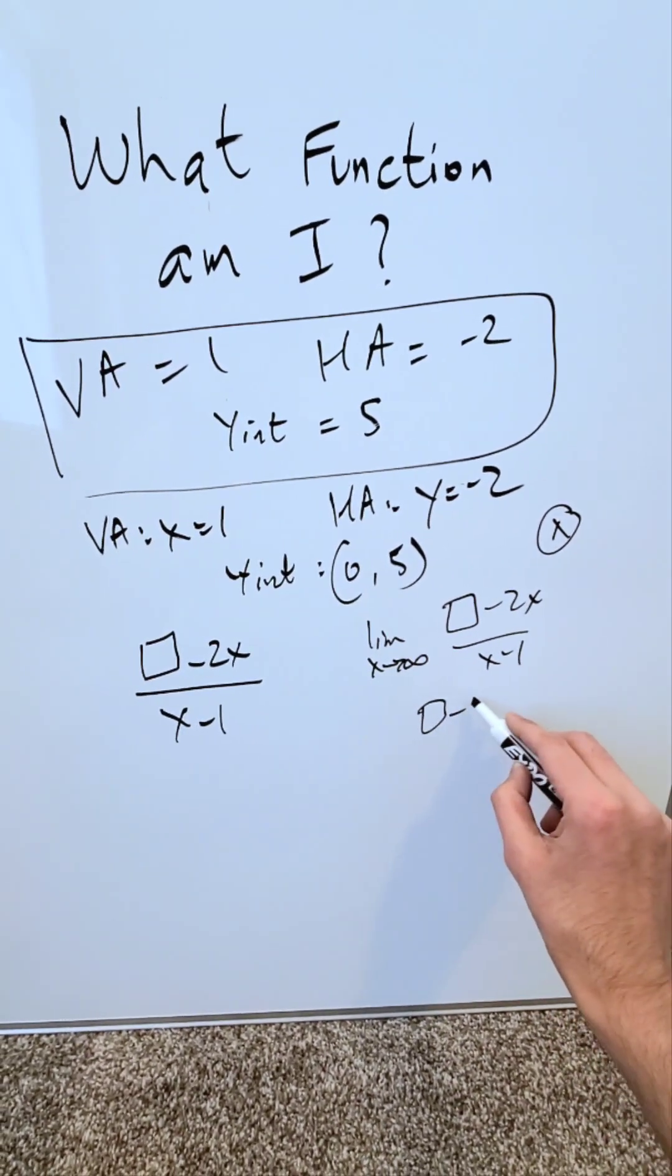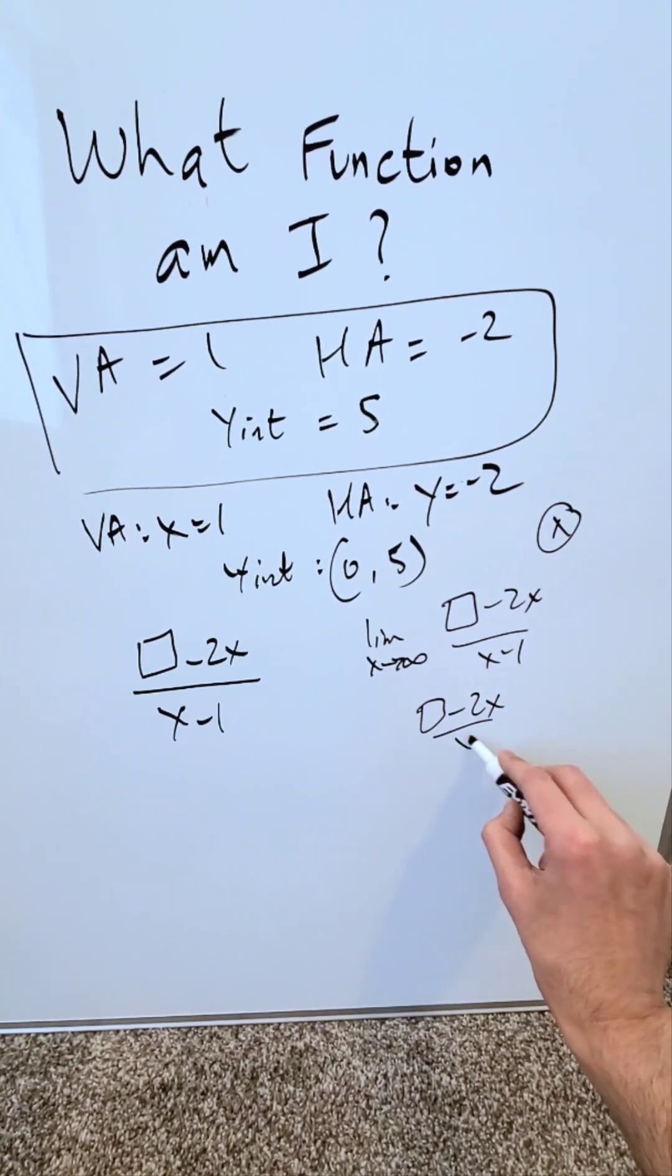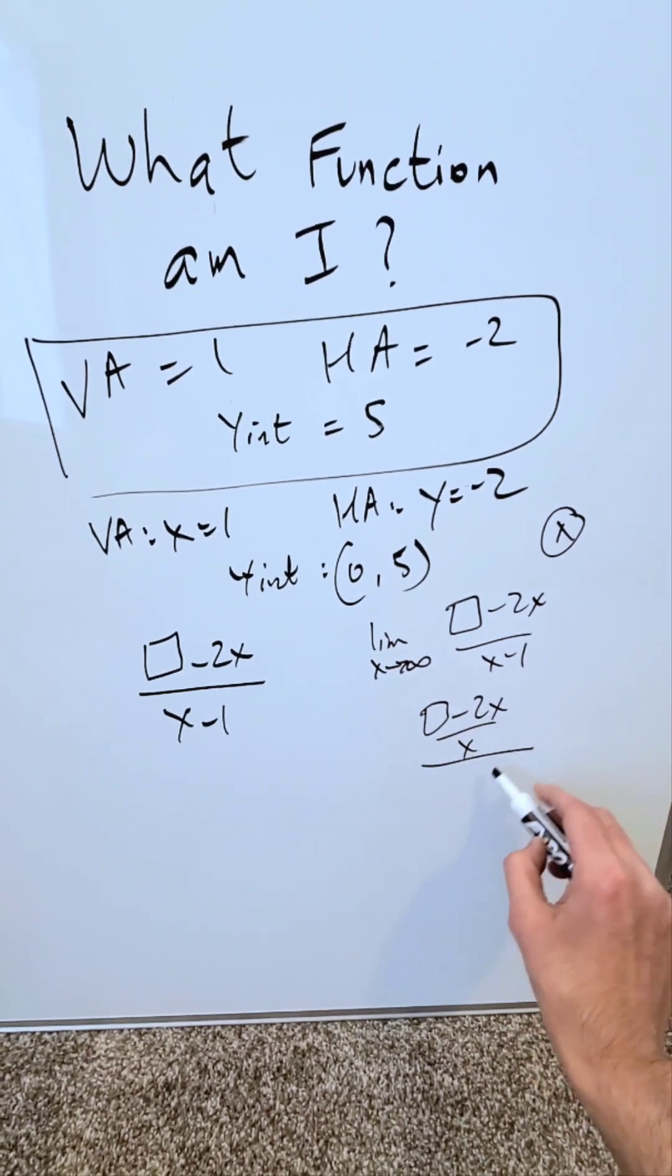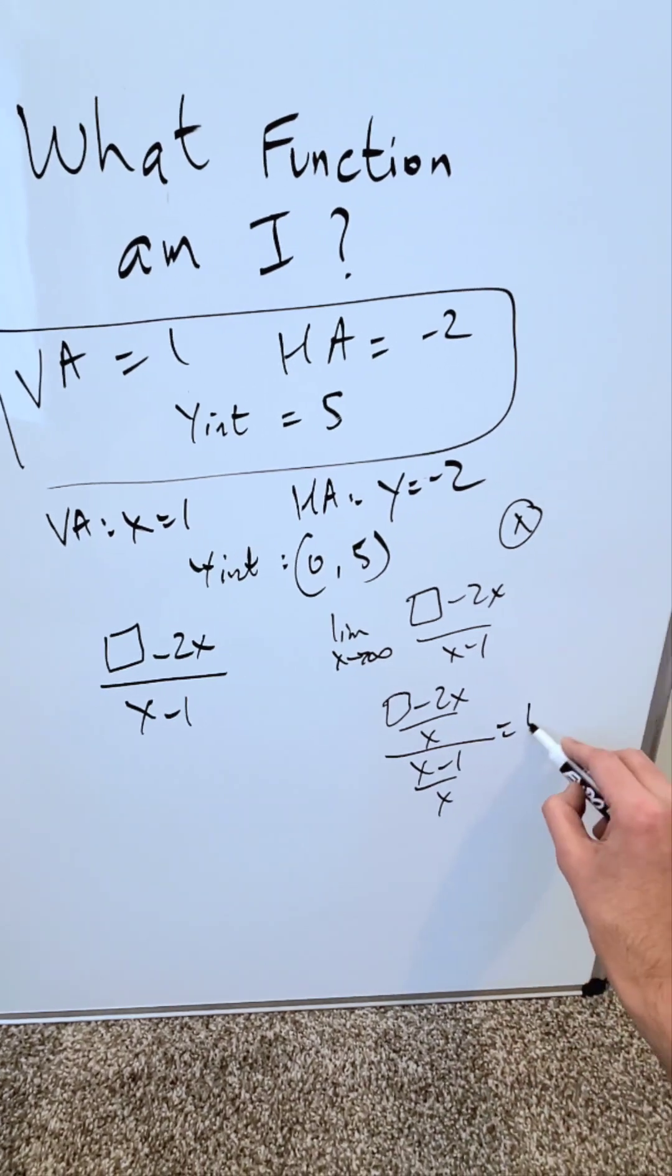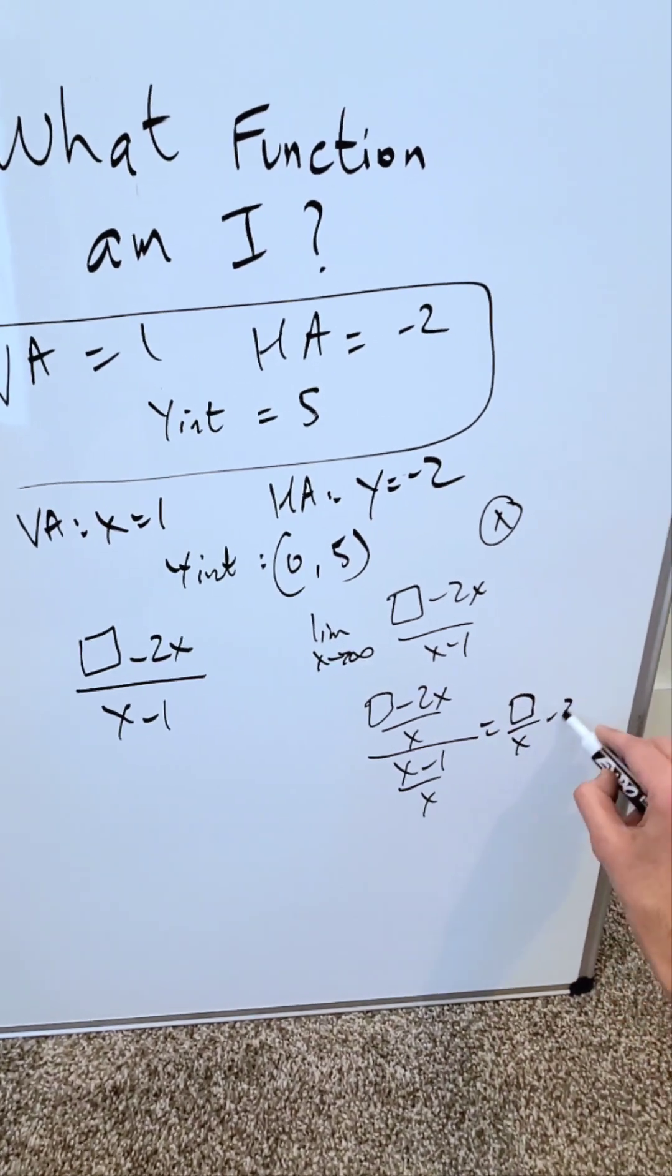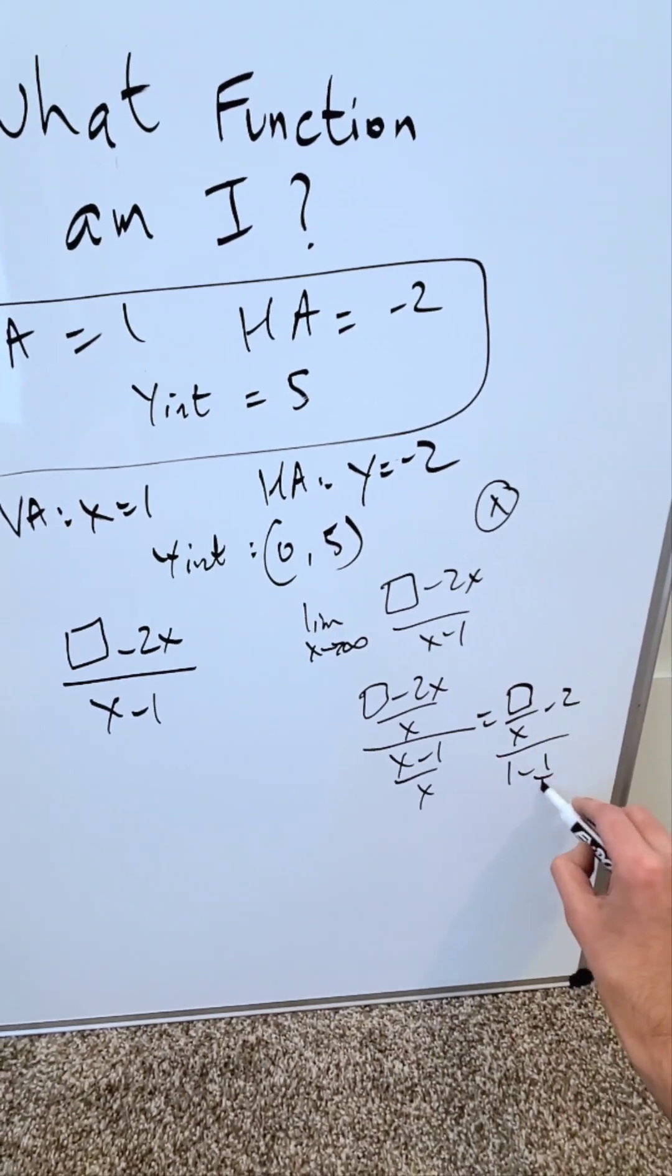In the numerator you'd have a box item minus 2x over x. This box item is my unknown, I have to determine it, divided by x minus 1 over x. When you simplify it out, you'd have a box over x minus 2 divided by 1 minus 1 over x.